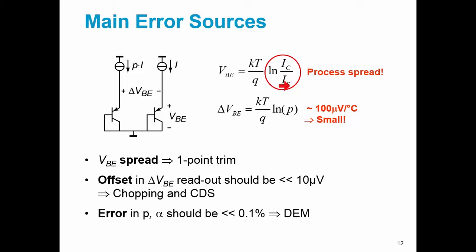And in line with our maxims, we need to use dynamic techniques to reduce offset because the offset in reading out delta VBE, which is a small signal, needs to be kept to less than 10 microvolts or so. So we're going to use chopping and CDS for that. And this current ratio, this current ratio P, this gain factor alpha, needs to be accurate to within 0.1%. And rather than trying to use huge components and get super matching, we're just going to use dynamic element matching.